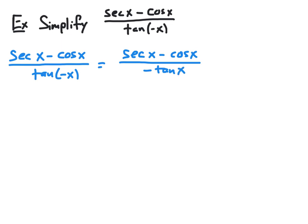Sine is an odd function, so we can pull negatives outside. Cosine is an even function, so negatives inside don't matter. But tangent is odd, so we can pull the negative outside. Now we have secant, cosine, and tangent. There's no Pythagorean identity that applies here because nothing is squared, so the only options are the reciprocal identities. We can replace secant with 1 over cosine of x, and replace tangent with sine over cosine of x.